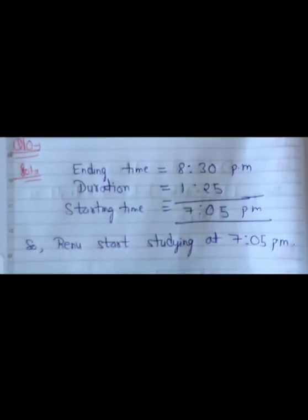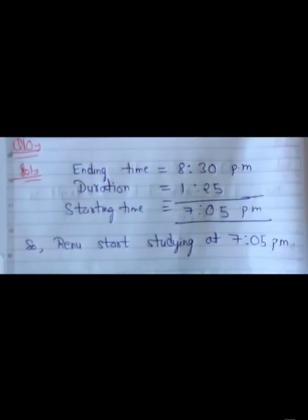Question 10: Renu studied for 1 hour 25 minutes — that is the duration — and she stopped studying at 8:30 PM, which is the ending time. To find the starting time, we subtract the duration from the ending time, giving 7:05 PM. So Renu started studying at 7:05 PM.